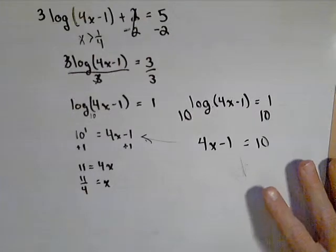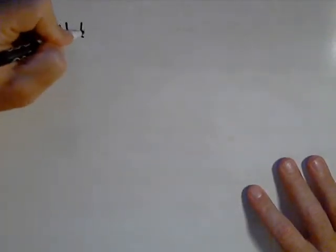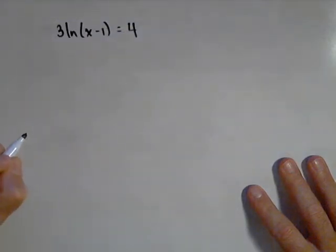This goes with pretty much a log of any base. So let's say we had a natural log. For instance, 3 ln(x - 1) equals 4.